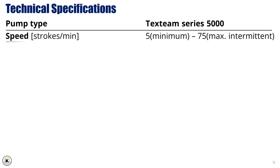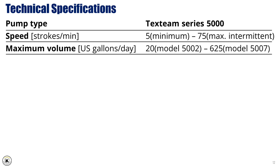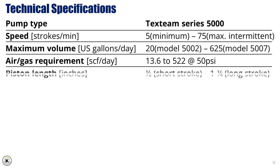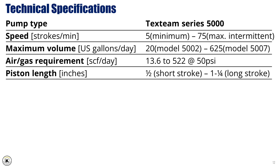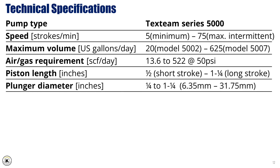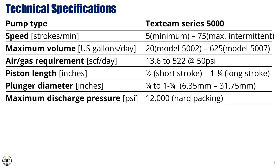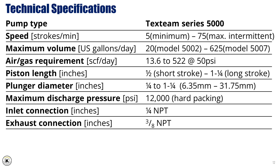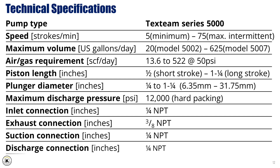Technical Specifications — Example: Pump Type: TechSteam Series 5000. Speed: 5 strokes per minute minimum, up to 75 strokes per minute maximum intermittent. Maximum volume: 20 US gallons per day (Model 5002), up to 625 US gallons per day (Model 5007). Air/gas requirement: 13.6 standard cubic feet per day, up to 522 standard cubic feet per day at 50 PSI. Piston length: half-inch short stroke, up to 1¼-inch long stroke. Plunger diameter: quarter-inch up to 1¼ inches (6.35 mm to 31.75 mm). Maximum discharge pressure: 12,000 PSI, hard packing. Inlet connection: ¼-inch NPT. Exhaust connection: ⅜-inch NPT. Suction connection: ¼-inch NPT. Discharge connection: ¼-inch NPT.